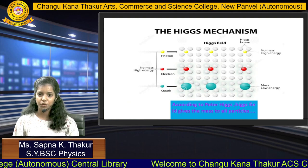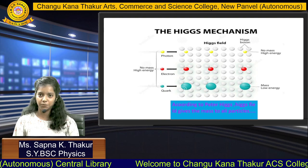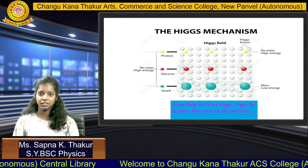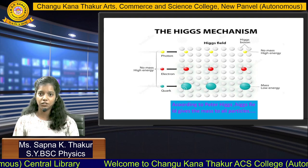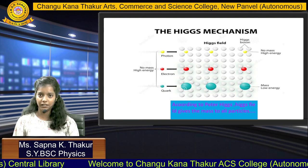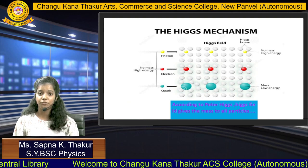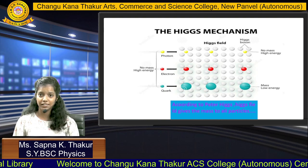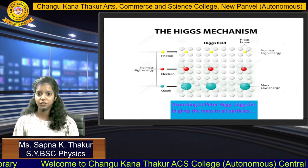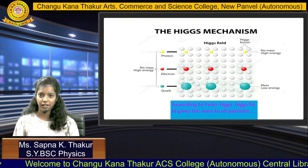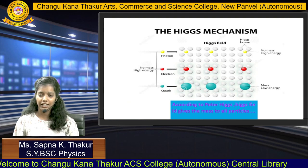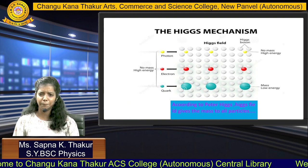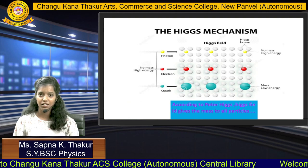You may have a question in your mind: if this field gives mass to all particles, then why is the photon massless and moves at the speed of light? Let us understand it with a simple example.